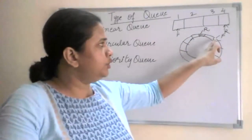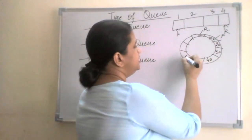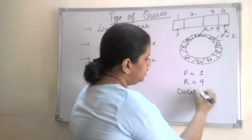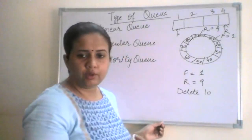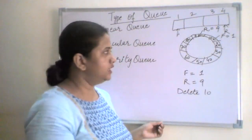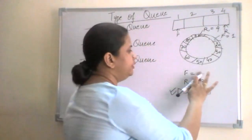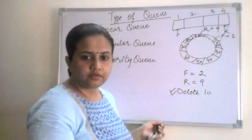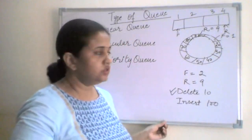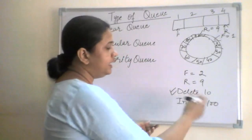In a circular queue, data keeps moving in a circular way. For example, if we insert 20, 30, 40, 50, 16, 17, 18 — now suppose we delete 10. When we delete 10, the first element in the queue is processed and removed, so the front will now become 2 and the rear will remain 9. Then suppose we want to insert element 100.